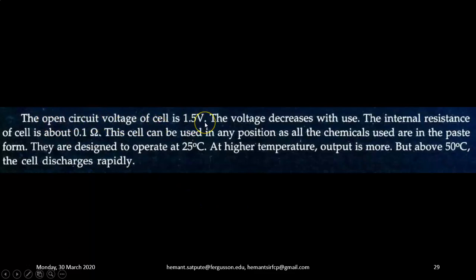The open circuit voltage of the cell is 1.5 volt. The voltage decreases with use. The internal resistance of cell is about 0.1 ohm. This cell can be used in any position as all the chemicals used are in the paste form. They are designed to operate at 25 degree centigrade.